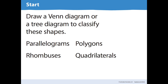To start today, draw a Venn diagram or a tree diagram to classify these shapes: parallelograms, rhombuses, polygons, and quadrilaterals. Pause the video, write down your answer, and then press play again.